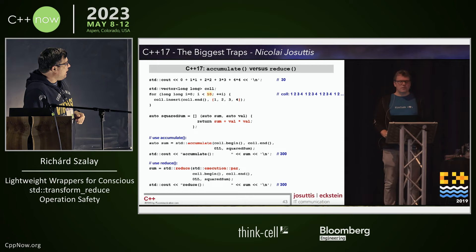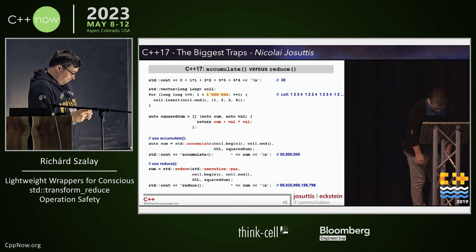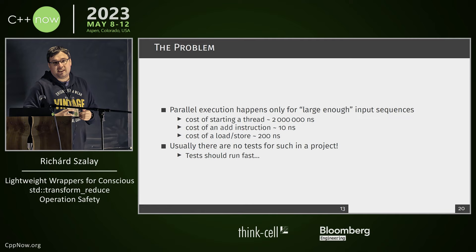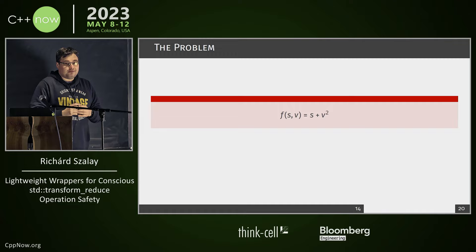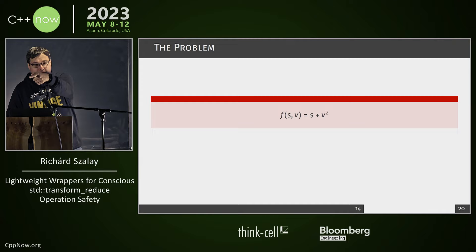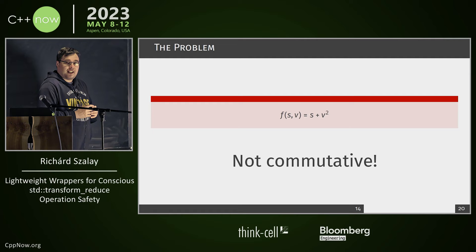It turns out that it just doesn't work. The problem is that people don't test this — you don't want to test tens of millions of data every time you run your build system. So what's the problem here? Not commutative — yes, and indeed.